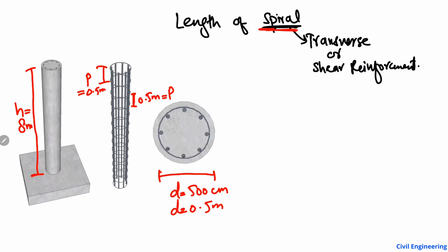Now we will find how we can find the length of the spiral used in this column. The length of this spiral can be found by a very simple formula: L is equal to N multiplied by the square root of C squared plus P squared. We will now find each parameter and put the values into this equation to find the length of the spiral reinforcement.